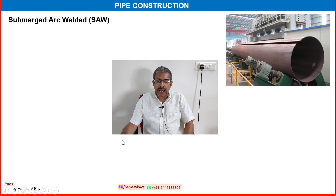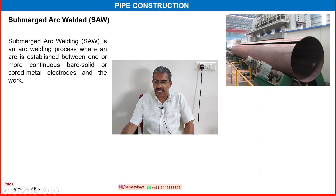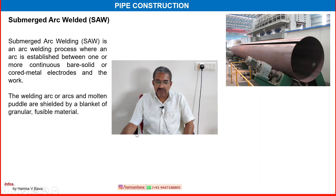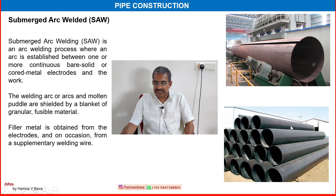Another method is submerged arc welding, SAW in short form. Submerged arc welding is an arc welding process where an arc is established between one or more continuous bare solid or cored metal electrodes and the work. The welding arc and molten puddle are shielded by a blanket of granular fusible material. Filler material is obtained from the electrodes and on occasion from a supplementary welding wire.